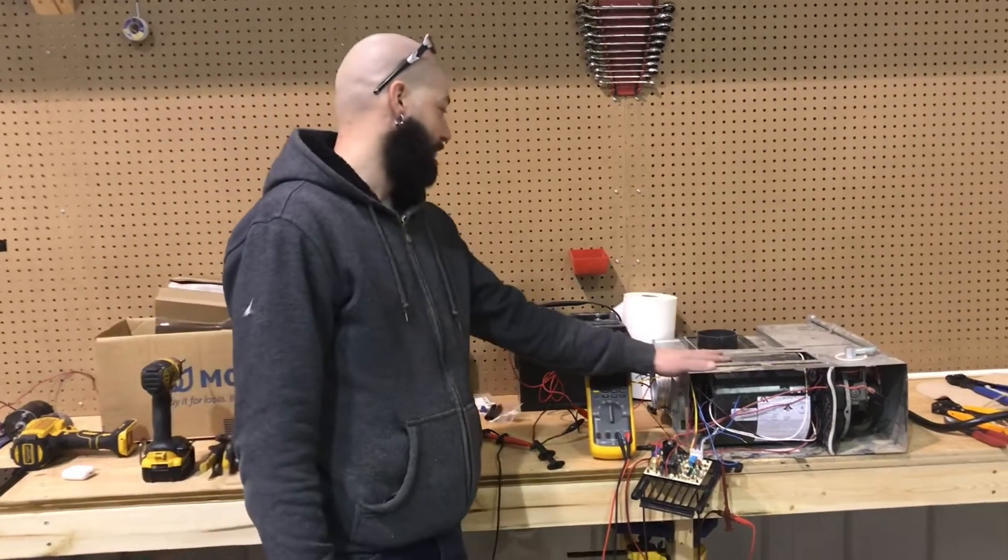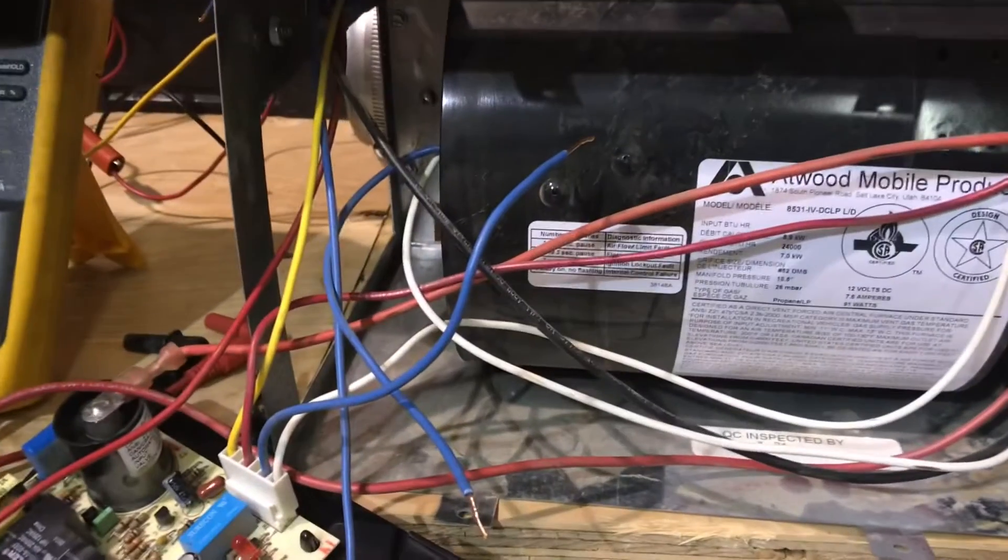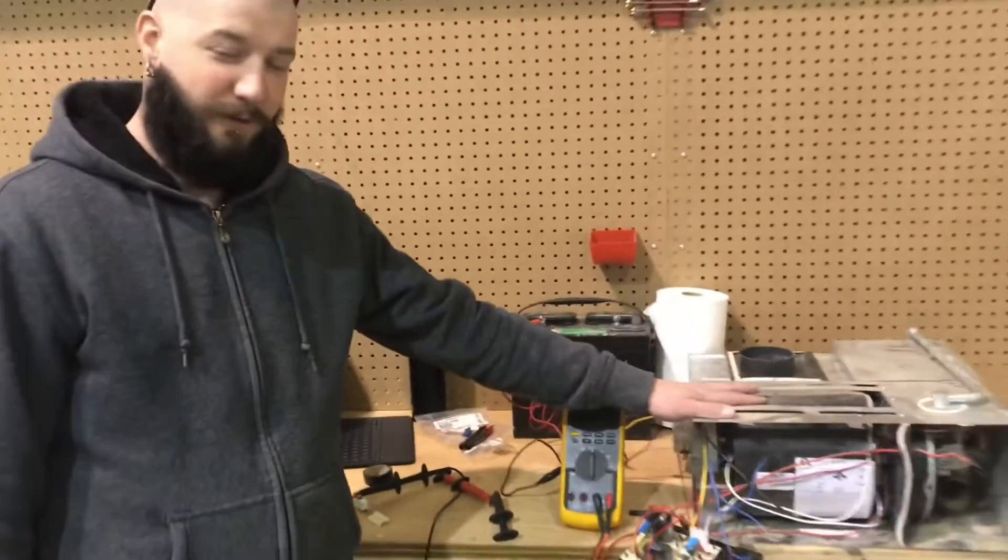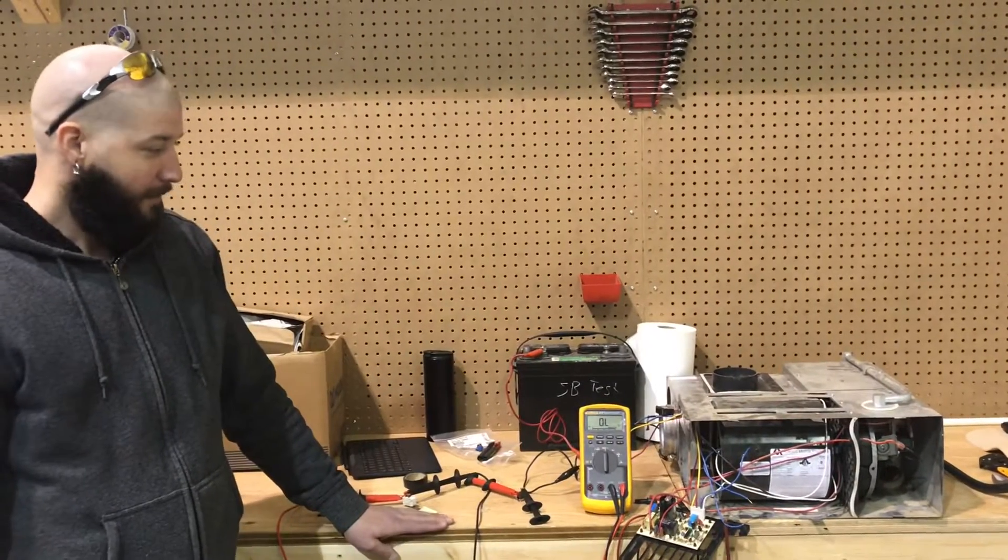Right now, what we have in front of us is an ATWIT 8531-4. We're going to go over a bit of the sequence of events and the components within the furnace itself.